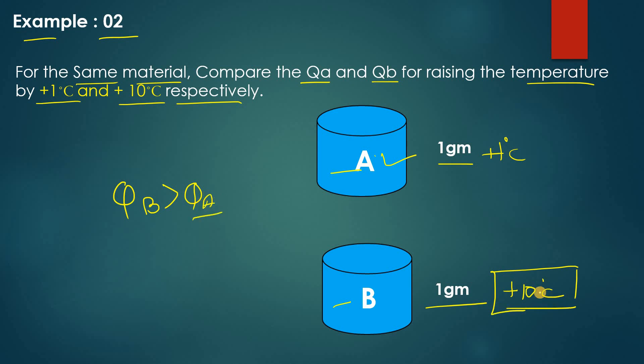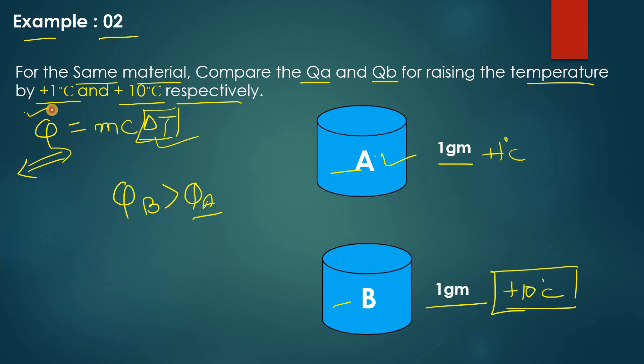Why? Because we have to raise the temperature by ten degrees Celsius for block B. The formula is Q = M C delta T. If delta T is more, then simply the Q will be high. If delta T is one compared to ten, you can compare QA and QB. So we can conclude: if the temperature difference is high, the amount of heat required will also be high.